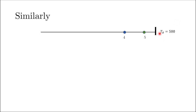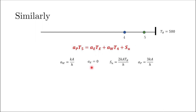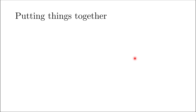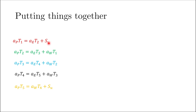For the right boundary node, point 5, we use the west point (node 4) but don't have an east point. Using the backward differencing scheme to evaluate the gradient, we arrive at an equation of the same general form where a_E = 0, while the other coefficients take a similar form to the left boundary treatment. Now putting it all together, we have five equations for five unknowns.